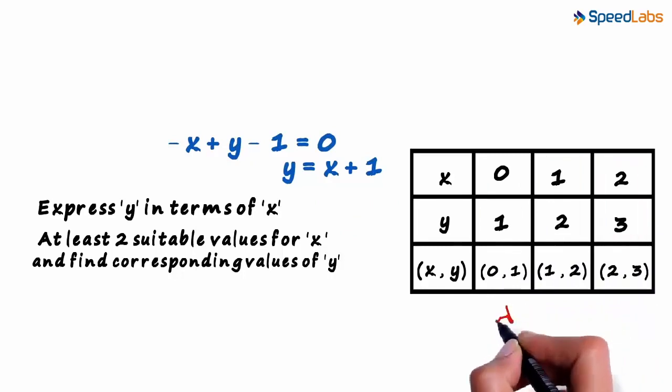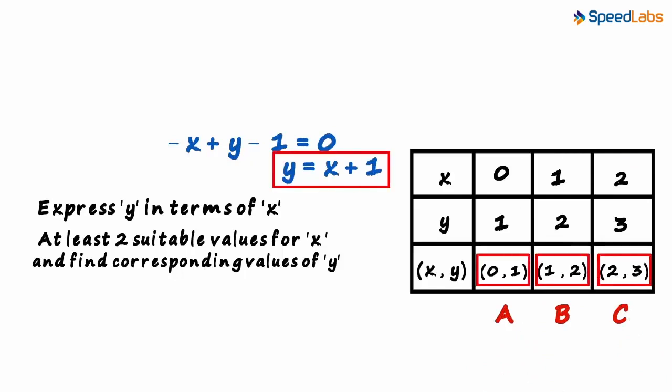Let's name these points A, B, and C. Remember, all these points satisfy this equation, which means that all these points will lie on the line of this equation.